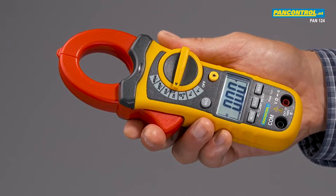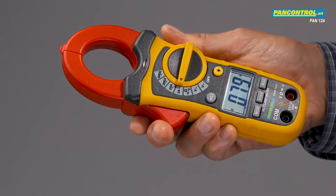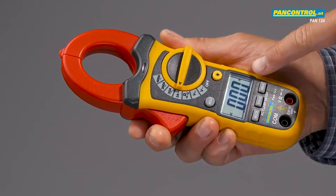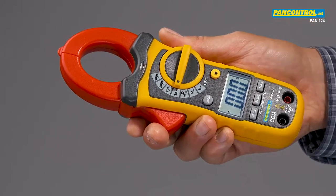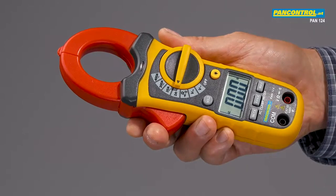Pan-124 is a compact clamp meter for AC current up to 400 amps. A special feature is its small 2 amp current range with a resolution of only 1 milliamp, so even small currents can be measured with high accuracy.